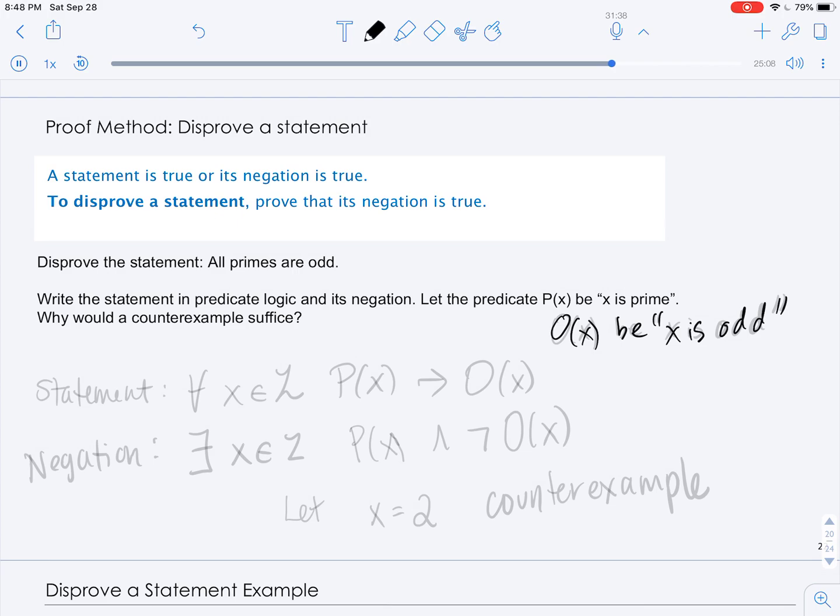We will give the example of how to disprove the following statement: All primes are odd. The first thing we want to do is make sure that we actually take the negation properly.